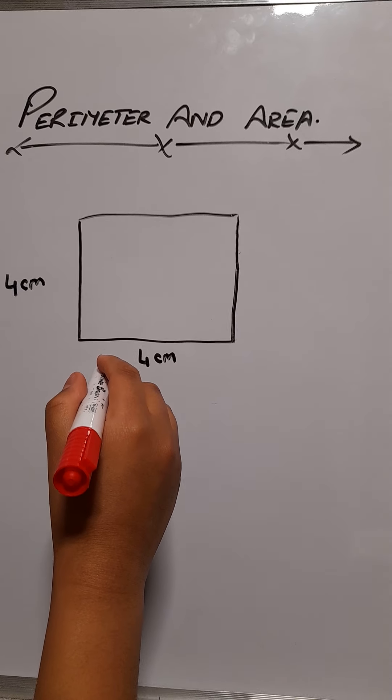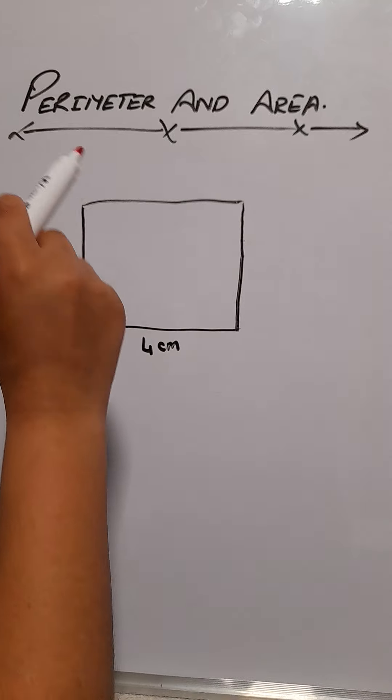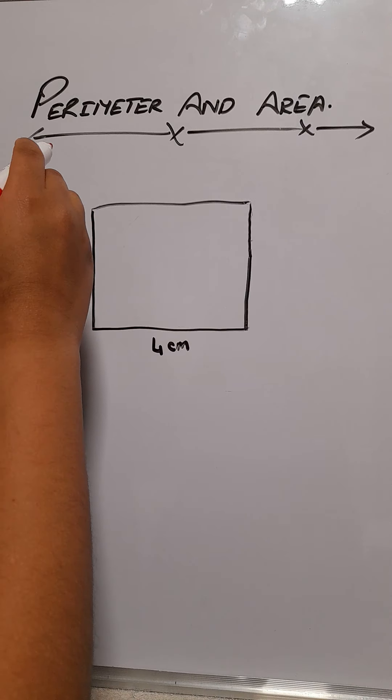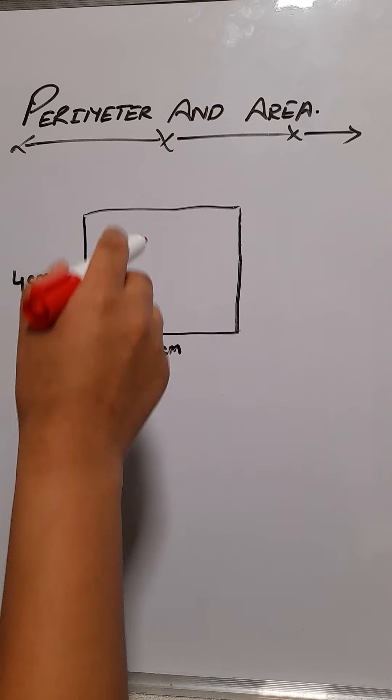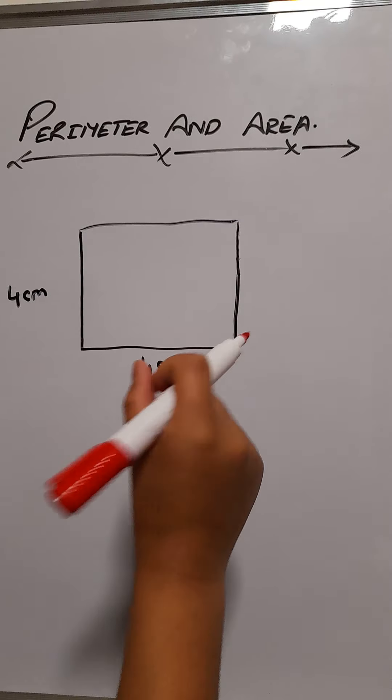Hello and welcome back to my channel My World. Today we are learning about the perimeter and area of a shape. As you see, we have a square laid out.